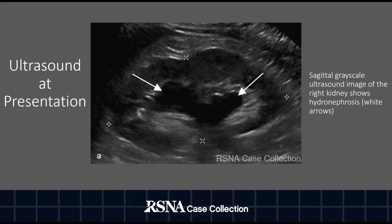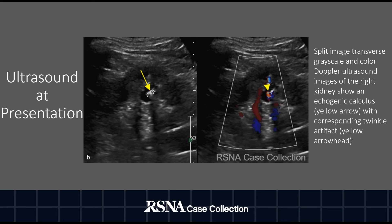Sagittal grayscale ultrasound image of the right kidney shows hydronephrosis, as indicated by the white arrows. Split image transverse grayscale and color Doppler ultrasound images of the right kidney show an echogenic calculus, as indicated by the yellow arrow, with corresponding twinkle artifact, as indicated by the yellow arrowhead.